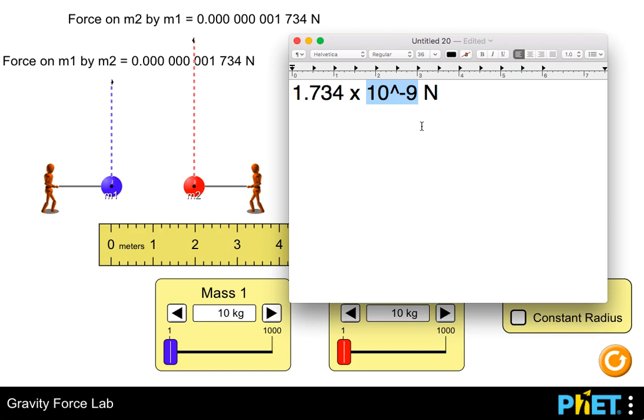Or you could even express this as a metric prefix. So this would actually be a nano-newton. In this case, nano-newton equals 10 to the negative 9 newtons.